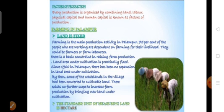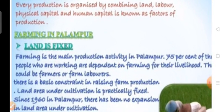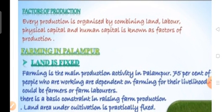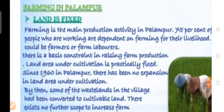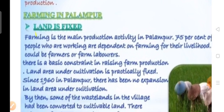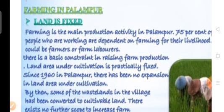Land is the foremost requirement in production processes. Every production is organized by combining land, labor, physical capital, and human capital — four different factors of production. Land is fixed; we cannot increase the size of the land. India has 3.28 million square kilometers of area, and only a small part of this land is used for cultivation.